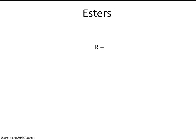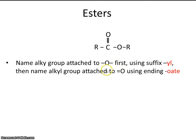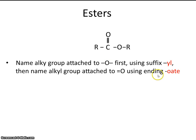Esters look similar to a carboxylic acid, except instead of a hydrogen, we have another R group. To name esters, first name the alkyl group attached to the singly bonded oxygen using the suffix '-yl,' then name the alkyl group attached to the doubly bonded oxygen using the suffix '-oate.'